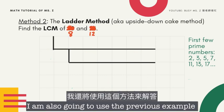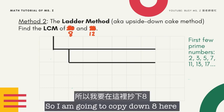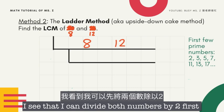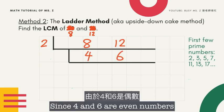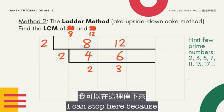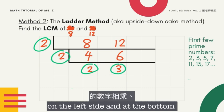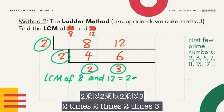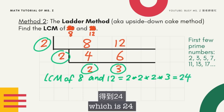To help you get familiar with this method, I'm also going to use the previous example. We need to find the LCM of 8 and 12. I can divide both by 2 first: 8 divided by 2 is 4, and 12 divided by 2 is 6. Since 4 and 6 are both even, I divide by 2 again: 4 divided by 2 is 2, and 6 divided by 2 is 3. I stop here because the GCF of 2 and 3 is 1. The LCM of 8 and 12 is 2 times 2 times 2 times 3, which equals 24 — the same answer as before.